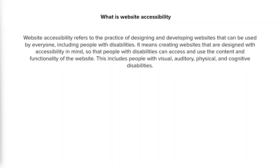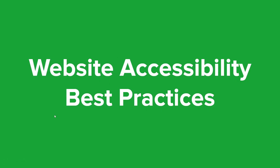Web accessibility is typically achieved through the use of standards and guidelines such as the Web Content Accessibility Guidelines, or WCAG, which provides best practices for making web content accessible to people with disabilities. And we'll go through some of these best practices today. So one example of a website accessibility best practice is providing text alternatives.